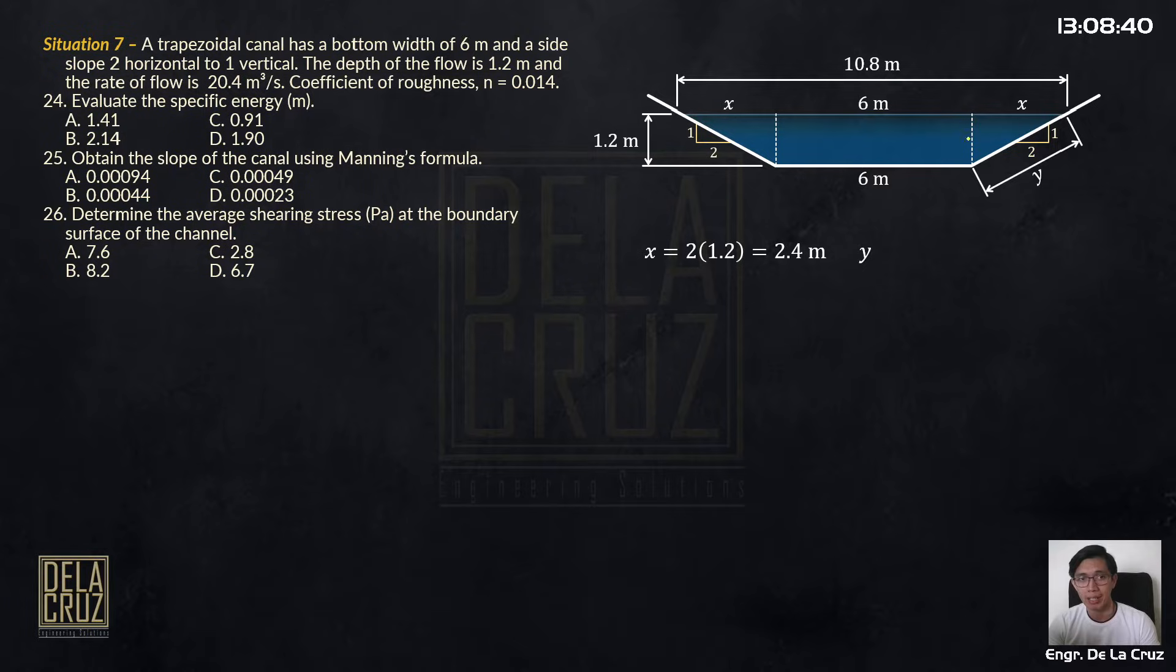Because this is a triangle. So y is square root of 1.2 squared plus x squared. Then x is known, you have 2.683.